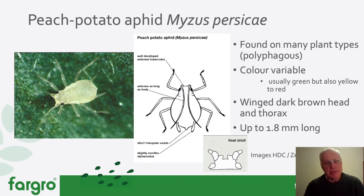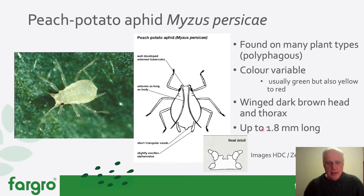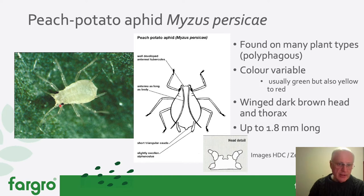Moving on to an example species: peach potato aphid, a very common aphid species, Myzus persicae. The colour can be variable depending, I think, on what it's been feeding on, and there are some subspecies. There are winged and non-winged forms — this is just the non-winged form shown here, up to 1.8 millimetres long as a mature aphid. We're looking at the general insect shape, the short triangular cauda, and the siphunculae — the diagram shows a slight bulbous end on them, though that can be hard to see. With a hand lens and a live specimen, you can quickly check that features match the diagram and get your eye in on what the aphid looks like.